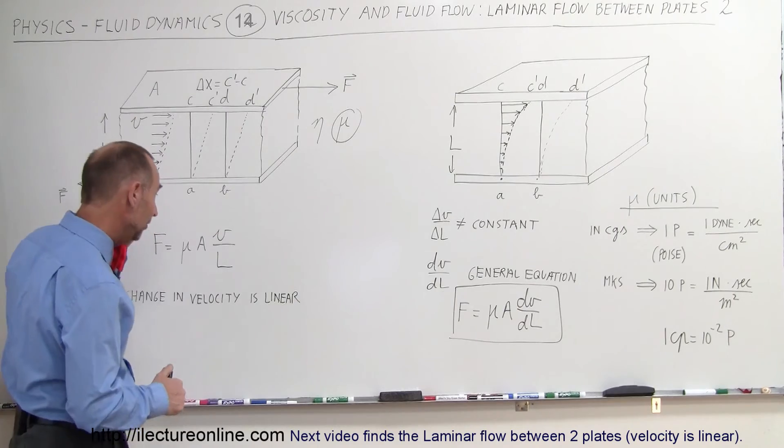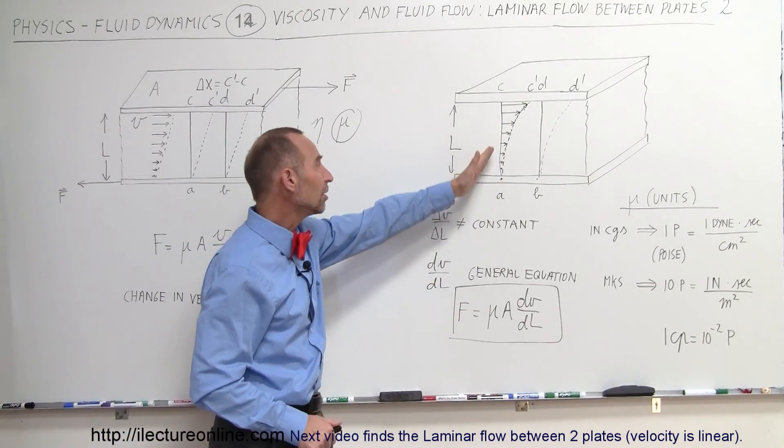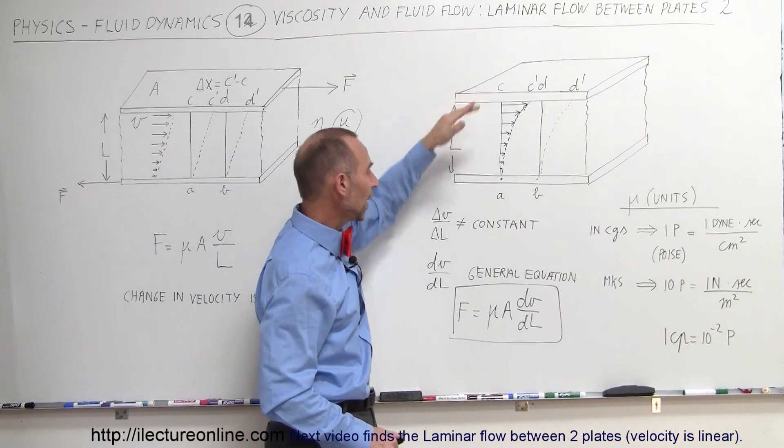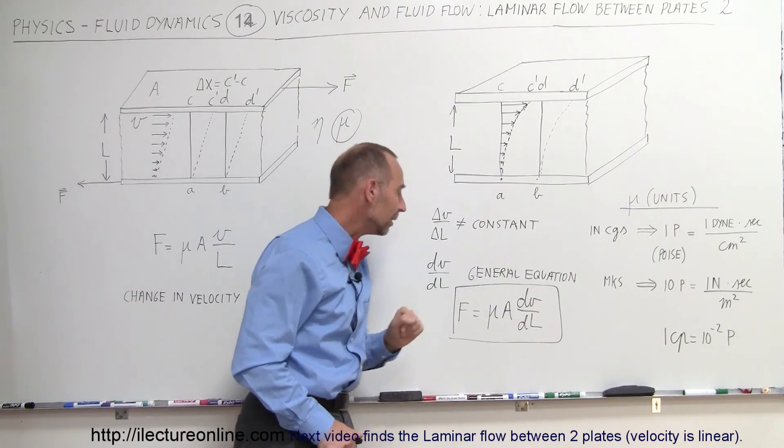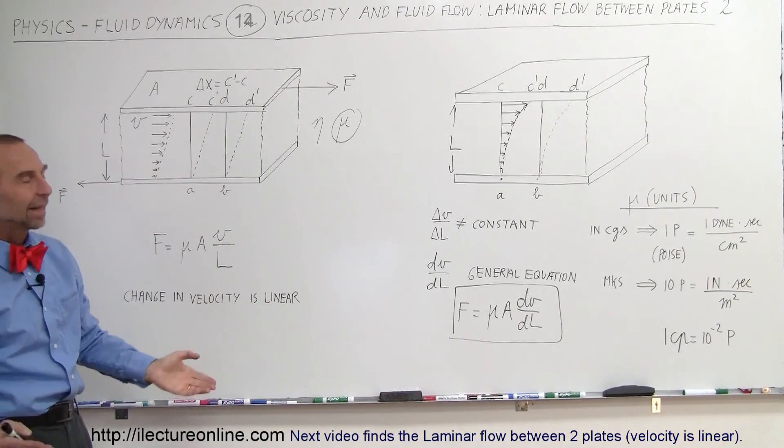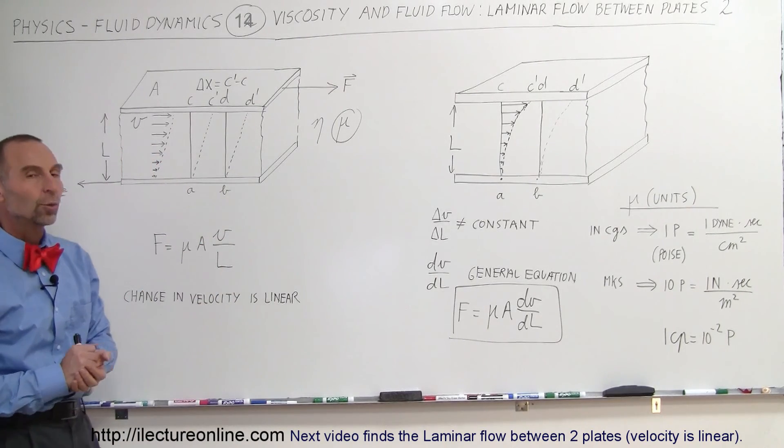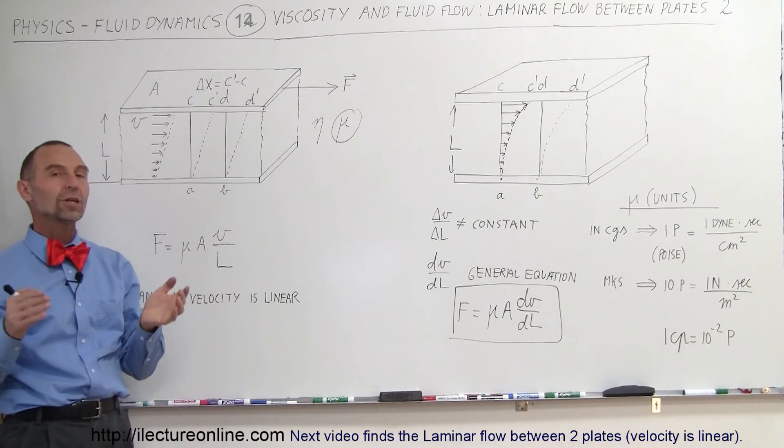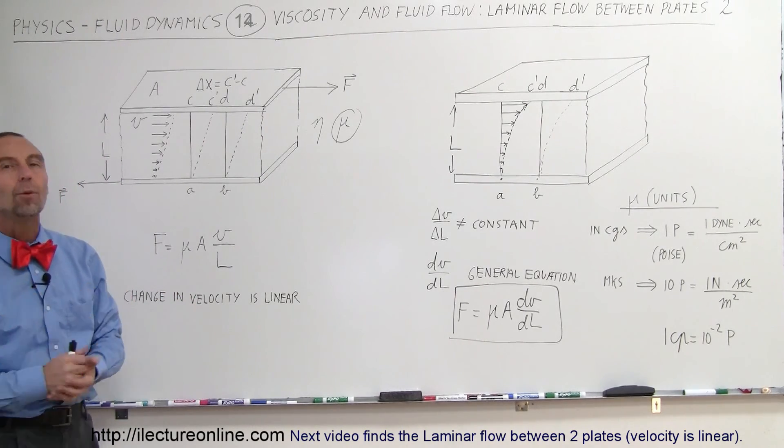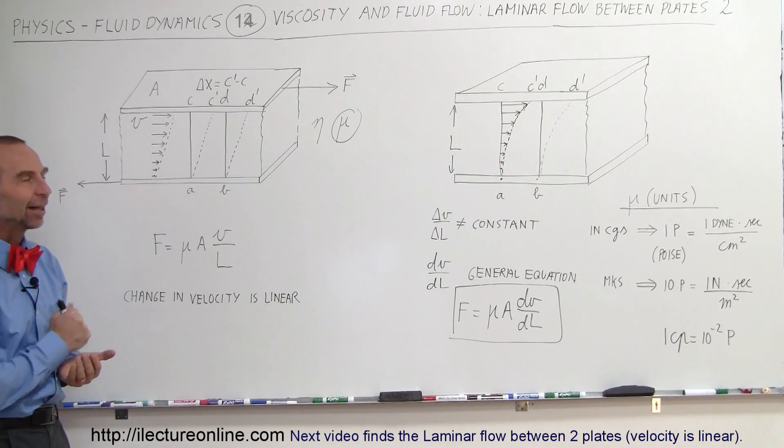So we have the very same equations we did before but if it's a non-linear change in velocity with respect to position from the top to the bottom plate we use dv dl instead of the ratio v over l. That's now become the general equation. In the next video we'll show you an example of how to apply these equations.